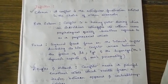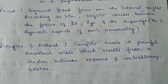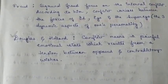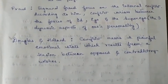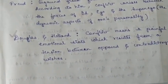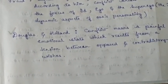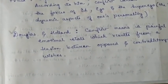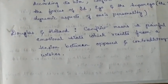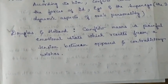Here I have chosen two definitions of conflict. One is given by Coleman, the other by Douglas and Holland. According to Douglas and Holland, conflict means a painful emotional state which results from tension between opposed and contradictory wishes. The person goes through an unpleasant emotion that results in tension, because he has to choose between two equally desirable or undesirable goals — and that dilemma or tension is known as conflict.